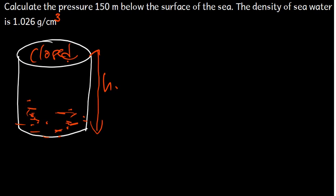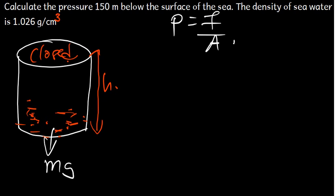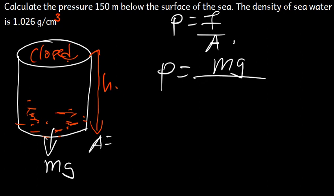Now how do we find the pressure? Pressure is given by force divided by area. The force exerted by the water is just basically the weight of the water, so we can say that force is mg. So pressure is going to be equal to mass times gravity divided by the area, and the area of the cylinder is pi r squared.